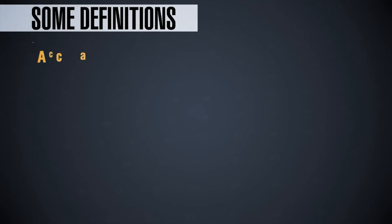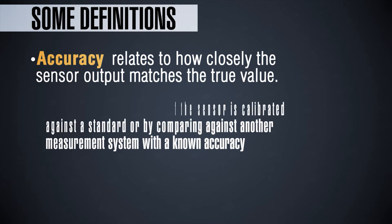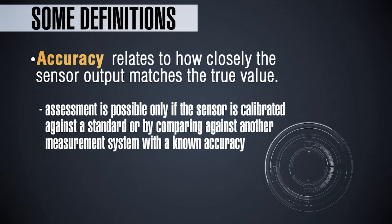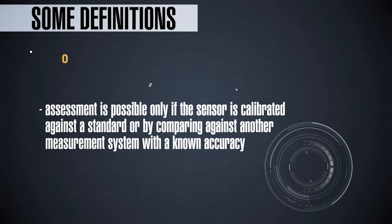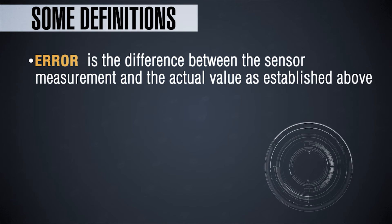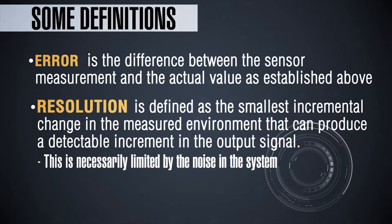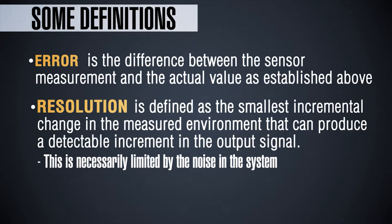Before we go into sensor development, I want to provide some of the basic definitions in the field of sensors. The most important definition is accuracy — how closely the sensor output matches the true value. To know the true value, you have to calibrate the sensor against a known instrument. The difference between the sensor output and the actual value is the error. Resolution is the smallest change in the environment that can produce a measurable signal in your sensor.